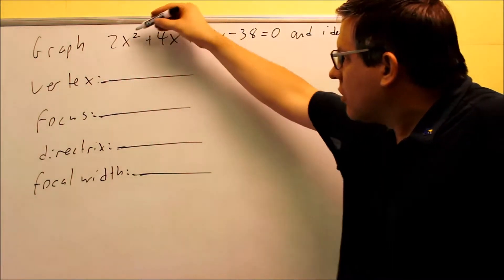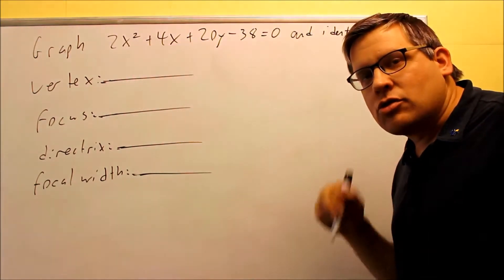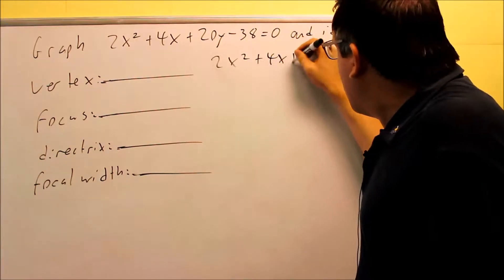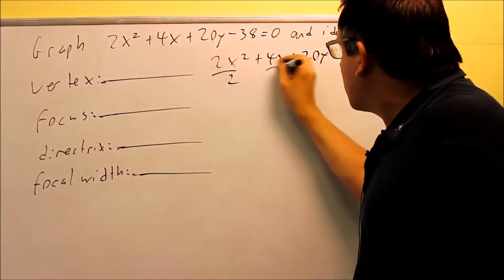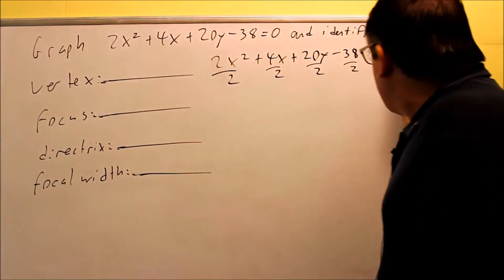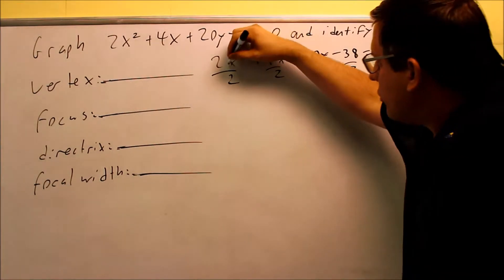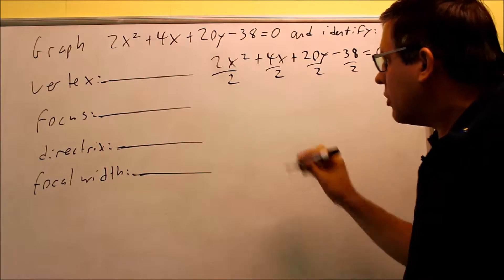Also it will make the complete the square steps easier because you actually have a 1 in front of the x squared. That's usually what you want to go with. So I'm going to take this equation right here and I'm going to divide everything on both sides by 2. By doing that it's going to make the problem simpler. You're not always going to be able to do this in each problem but this particular one we were able to do that.